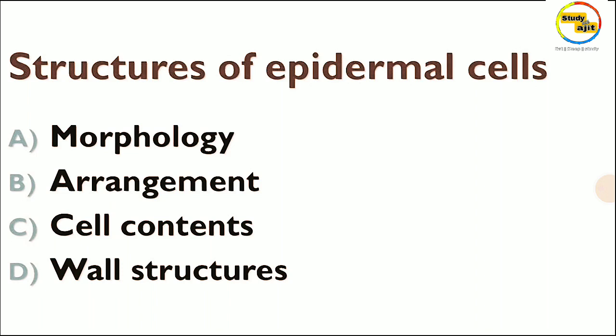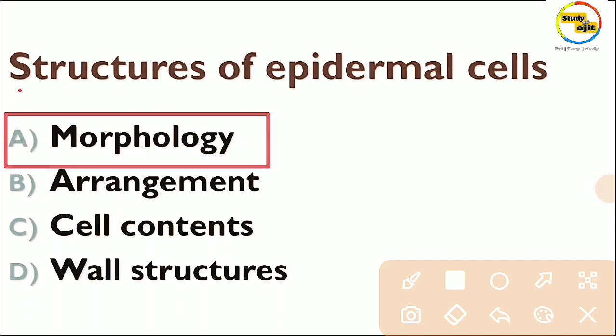The structure of the epidermal cell is divided into four parts: number one, morphology; number two, arrangement; number three, cell contents; and number four, wall structure. This is the structure of the epidermal cell.